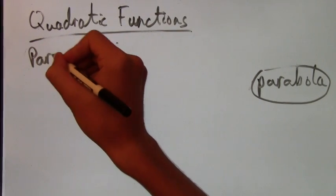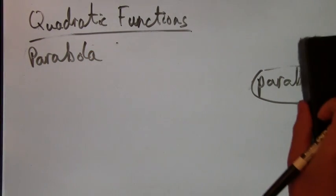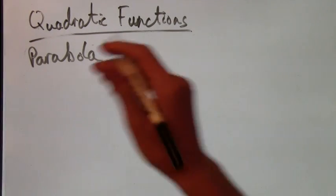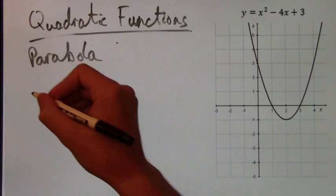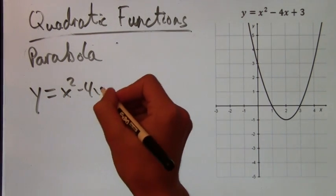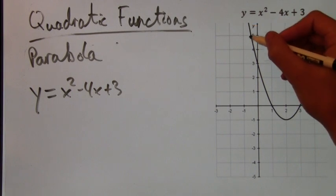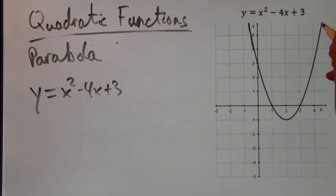Now we're going to take a look at a few parabolas. All parabolas are similar to each other. They're not lines, not straight lines. But they all have things in common. So here we have y equals x squared minus 4x plus 3. Now notice it curves down and then goes back up.